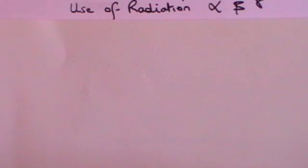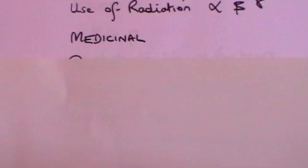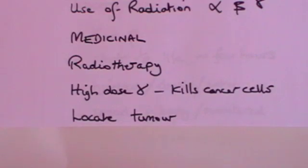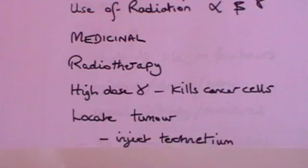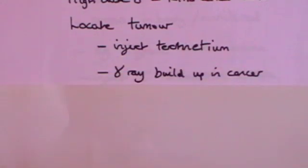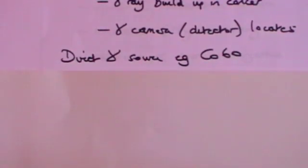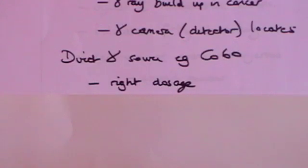Of course there are constructive uses of this radiation. One of the main ones is in medicinal work — radiotherapy. A high dose of gamma radiation will kill cancer cells. The problem is it will also kill any ordinary cells with which it comes into contact. So the first thing you want to do is locate precisely where the tumour is in the body, so that you can focus your gamma radiation on it. This is usually achieved by injecting some kind of radioactive material like technetium. The gamma rays will build up in the cancer, and you can then detect those with a gamma camera to locate precisely where the tumour is. A good source is something like cobalt-60.